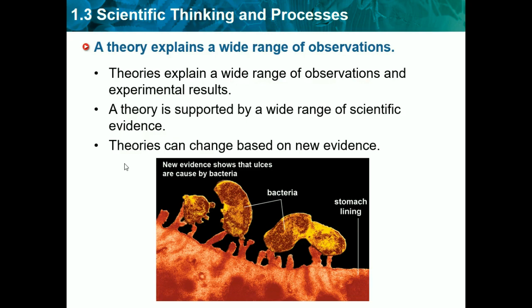On the other hand, we have laws. Laws predict the outcome of certain events — they're usually math calculations, and math calculations will always be right. Laws predict; theories explain. And another thing to note is theories cannot change into laws. It's a big misconception that everybody thinks — that theories eventually become laws if backed up by enough evidence. But they're two separate things: theories explain and laws predict.